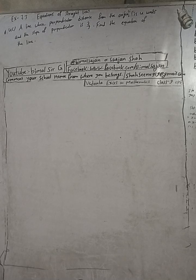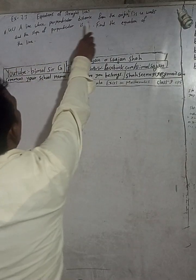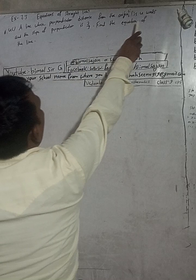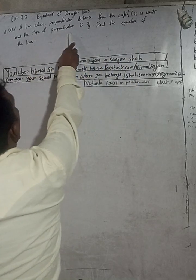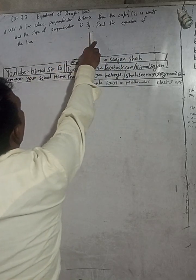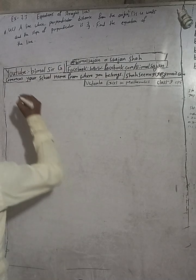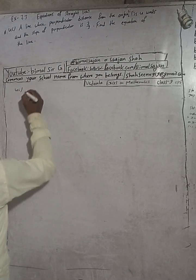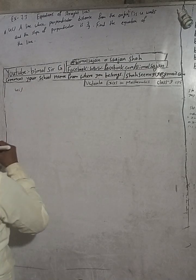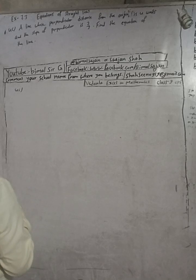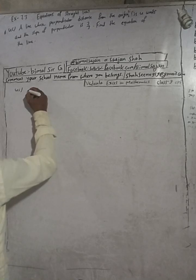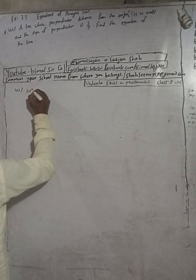The question is: a line whose perpendicular distance from the origin is 4 units and the slope of perpendicular is 2 by 3 — find the equation of the line. So here is the question. Given: solution for a line whose perpendicular distance from the origin.